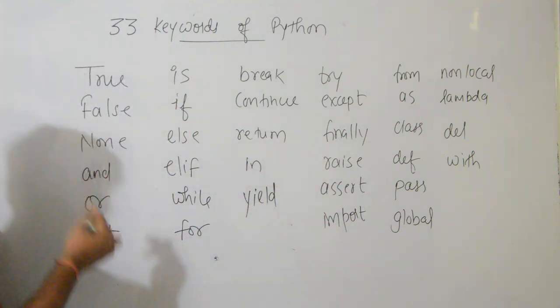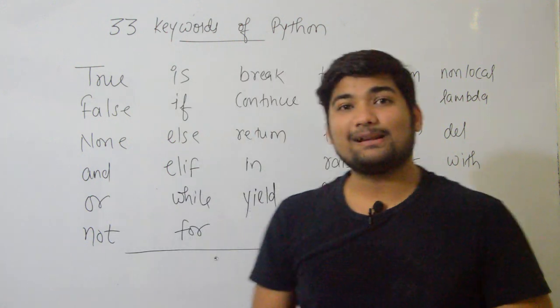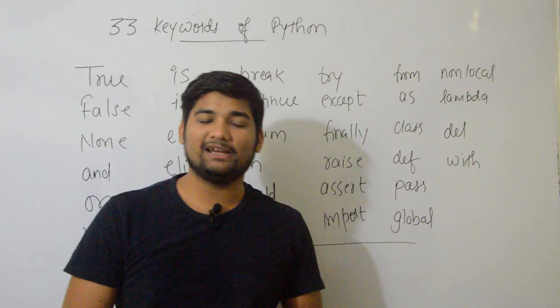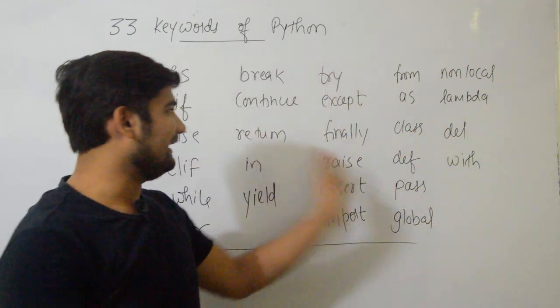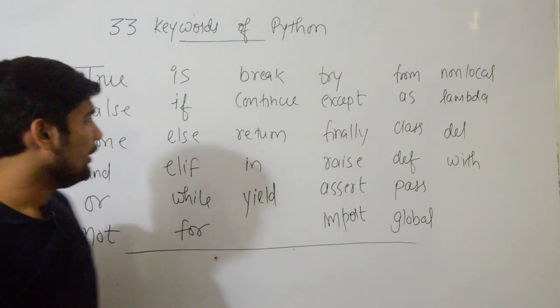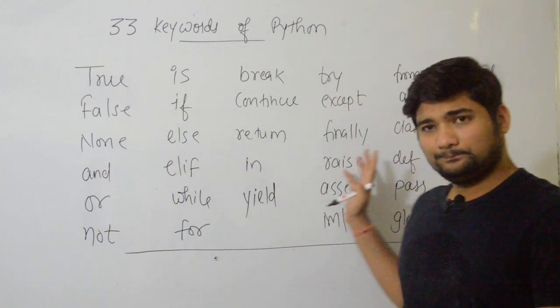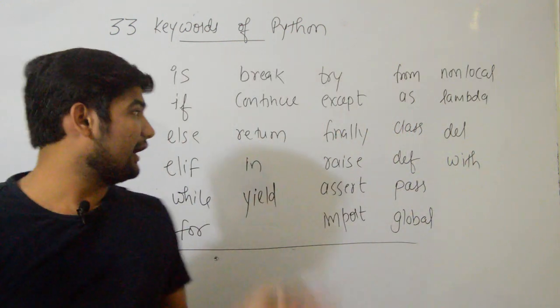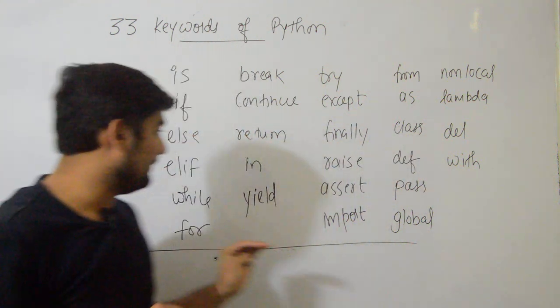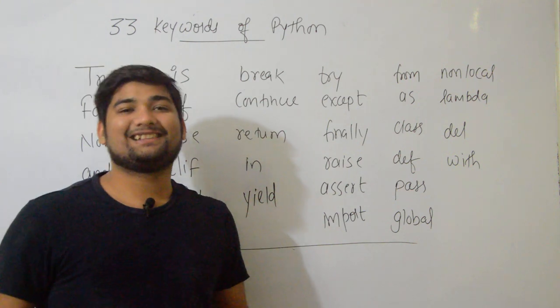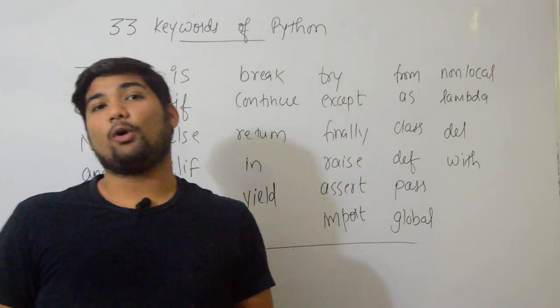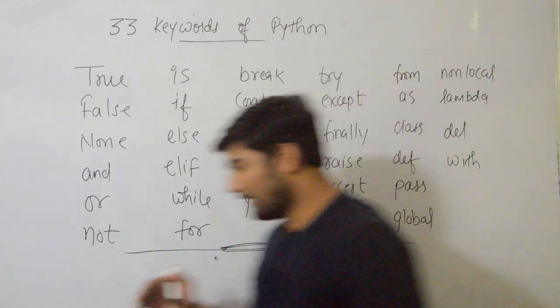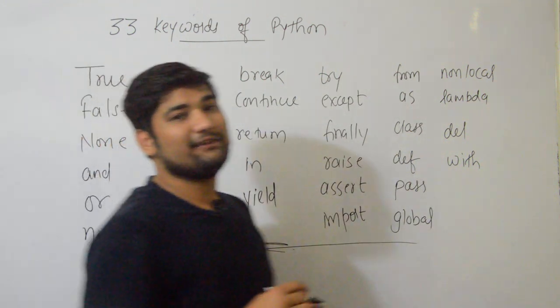So, these are 33 keywords. If we understand these 33 keywords, Python becomes much easier. You should know them. You should note them down. I'm going to write the 33 keywords of Python on the side of the video. You will make sure you note down these 33 keywords here.